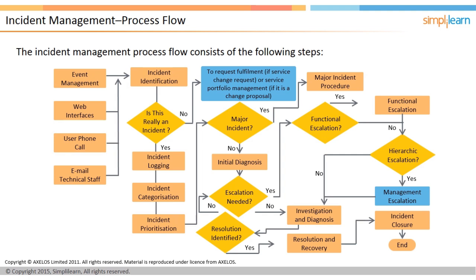Prioritization: once the incident has been categorized, it is assigned a prioritization code, which indicates the handling procedure to use. Incident priority is decided based on the impact and urgency of the issue. Functional escalation: after prioritization, an initial diagnosis is carried out to discover all the symptoms of the incident. If the service desk cannot resolve the incident, it is escalated for further support in a process called functional or horizontal escalation. Functional escalation is based on knowledge or expertise.